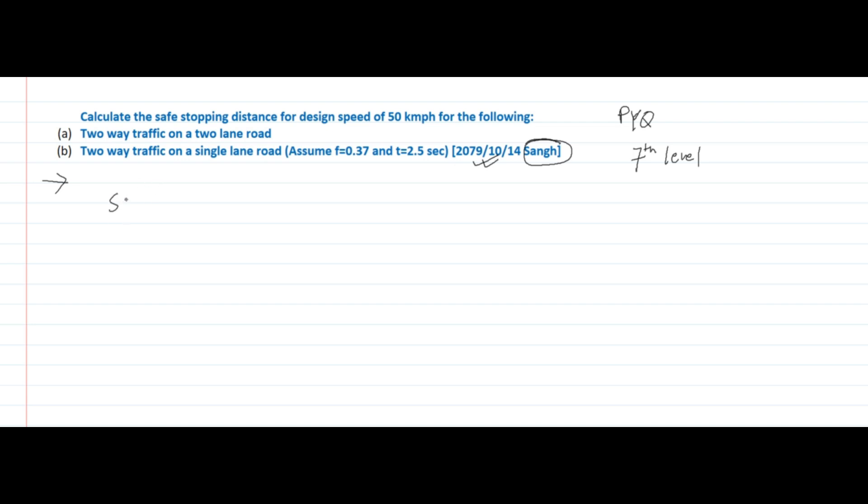SSD is the sum of lag distance plus braking distance, so it will be 0.278VT plus V squared by 254F. V is in kilometer per hour in this particular formula, and T is in seconds. So let's put the values in.